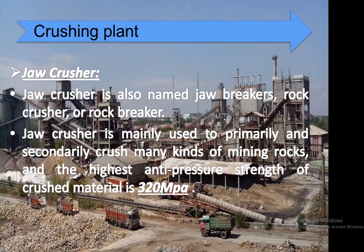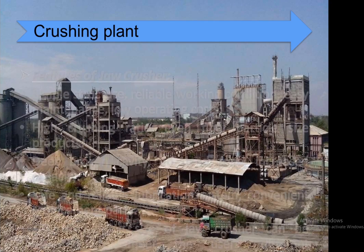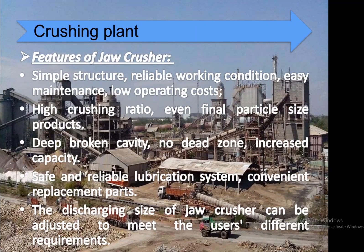A jaw crusher — also named jaw breaker, rock crusher, or rock breaker — is mainly used to primarily and secondly crush many kinds of mining rocks. The highest anti-pressure strength of crushed material is 320 MPa. Jaw crushers have simple structure, reliable working condition, easy maintenance, low operating costs, high crushing ratio, even final particle size, deep broken cavity with no dead zone, increased capacity, and a safe and reliable lubrication system. The discharging size can be adjusted to meet different user requirements.